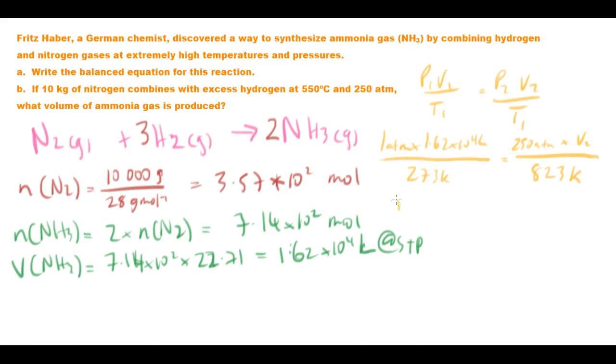If we arrange to get V2, you get about 1 atmosphere times 1.62 times 10 to the 4 times 823 divided by 273 times 250 atmospheres. So your final volume at those new conditions should be about 1.96 by 10 squared litres, which is 196 litres.